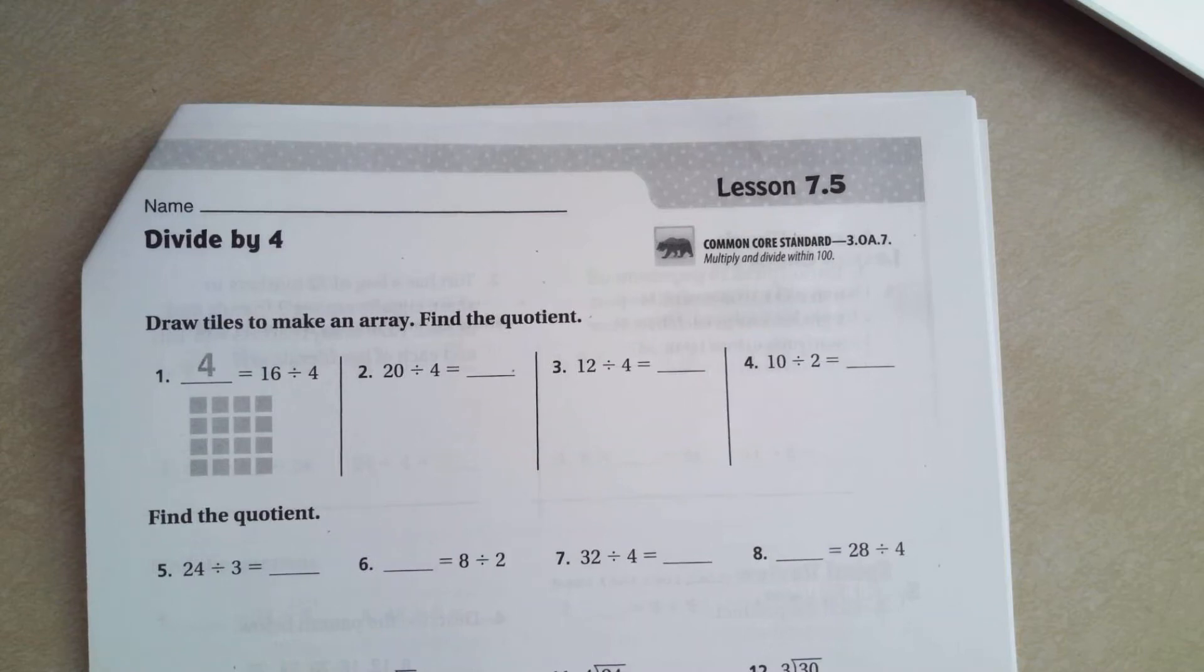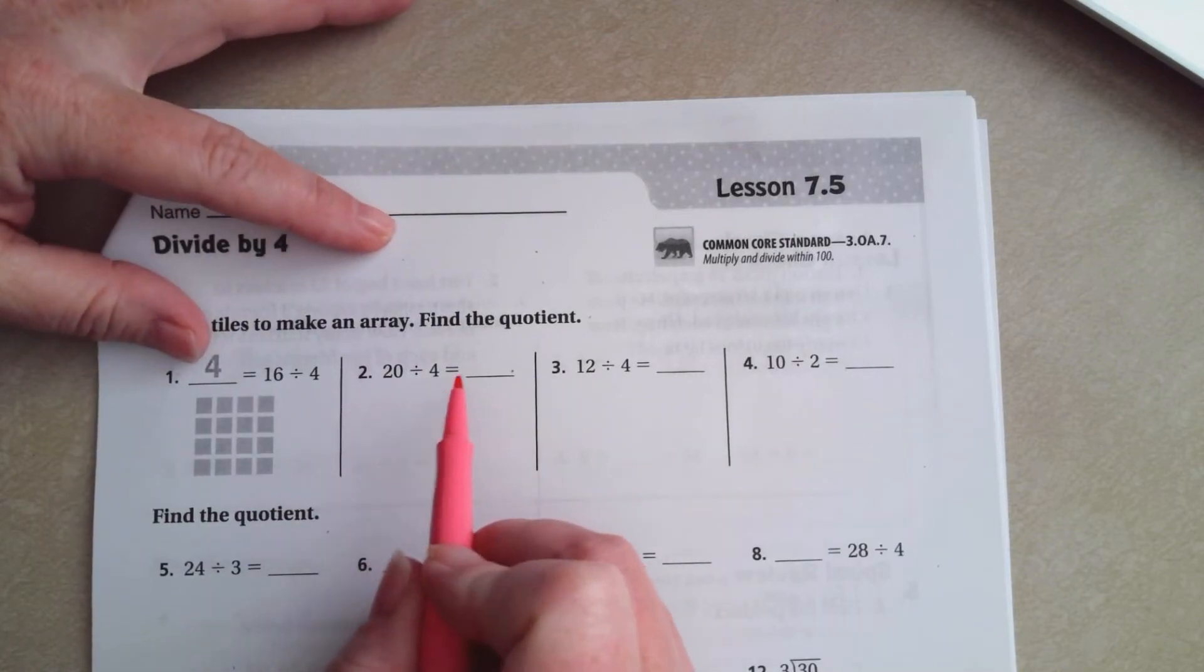Hey y'all, welcome to third grade chapter 7 lesson 5. We're going to go ahead and get started. It wants us to make an array to find the quotient here, so I'm going to make rows of 4.